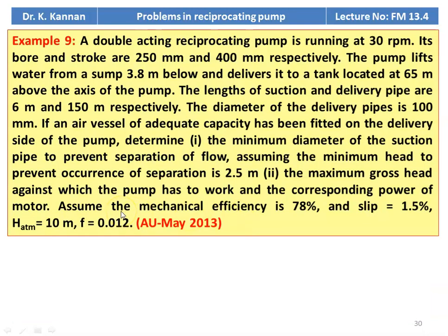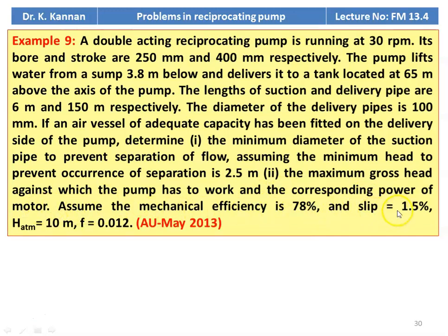Example number 9: A double acting reciprocating pump running at 30 RPM. Bore and stroke are 250 mm and 400 mm respectively. The pump lifts water from a sump 3.8 meter below and delivers it to a tank 65 meter above the pump axis. Length of suction and delivery pipes are 6 meter and 150 meter respectively. Diameter of delivery pipe is 100 mm. An air vessel of adequate capacity is fitted on the delivery side. Determine: minimum diameter of suction pipe to prevent separation (minimum head to prevent separation = 2.5 m), maximum total head, and corresponding motor power. Mechanical efficiency = 78%, slip = 1.5%, atmospheric head = 10 m, friction factor = 0.012.